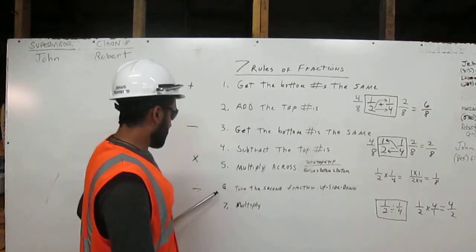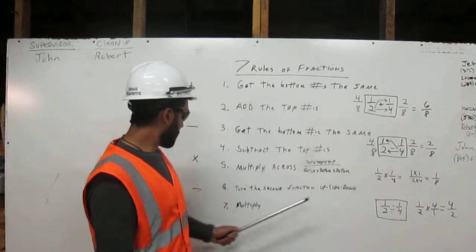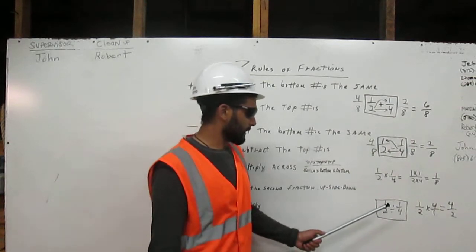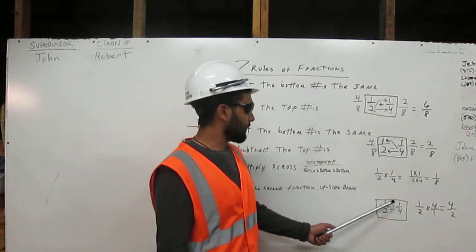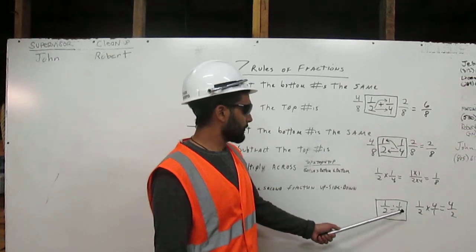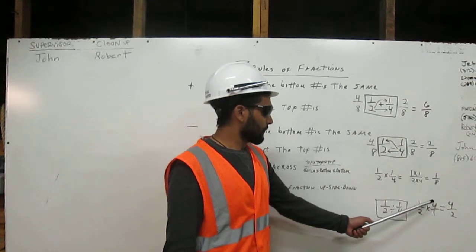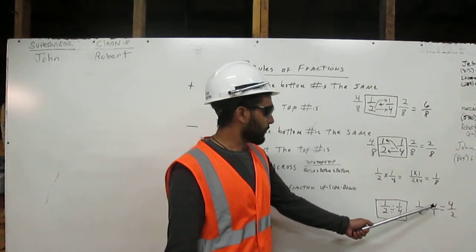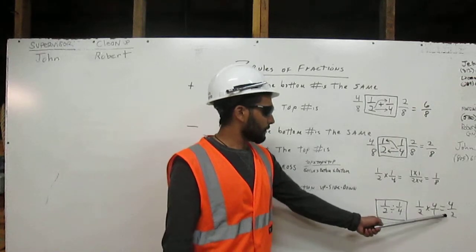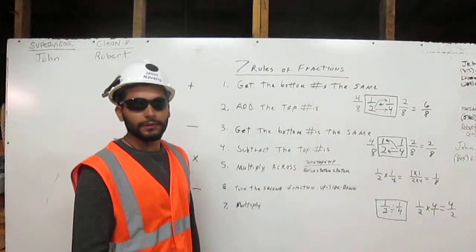And to divide fractions, we're going to turn the second fraction upside down, and then we're going to multiply it. In our example here, we have one-half divided by one-fourth. We're going to turn the second fraction upside down. We have one-half times four over one. That's going to equal four over two. And that's how we divide fractions. Thank you.